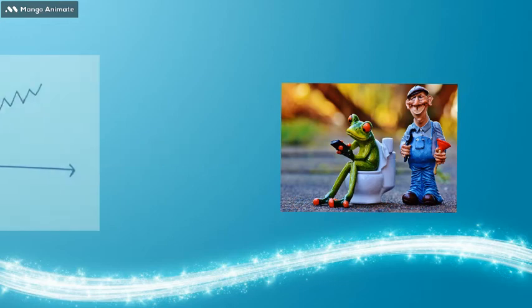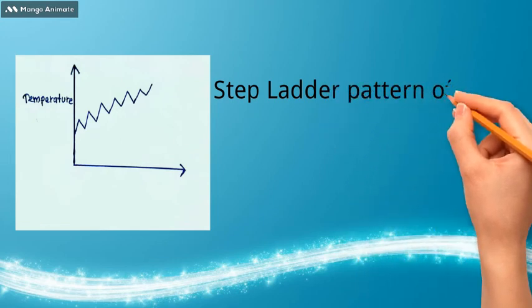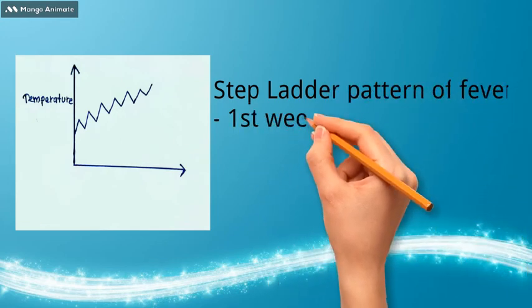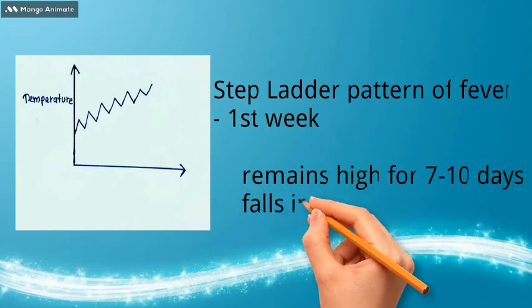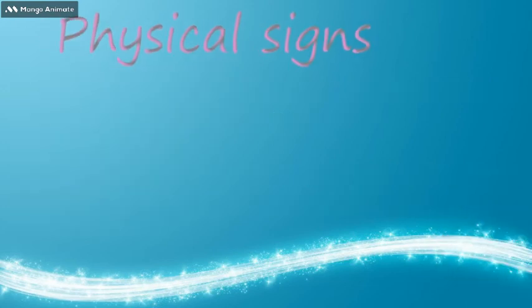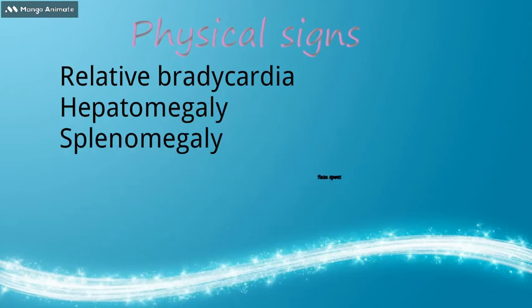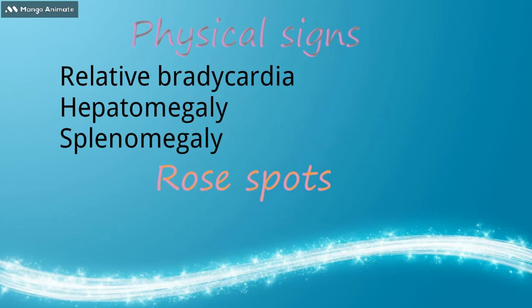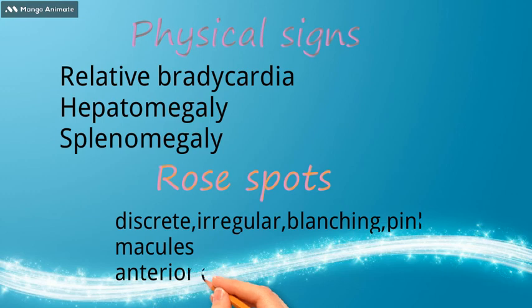In untreated cases, the temperature shows a stepladder rise over the first week of illness, then remains high for 7 to 10 days, and then falls during the third or fourth week. Physical signs include relative bradycardia, hepatomegaly, splenomegaly, and often a rash of rose spots. Rose spots are discrete, irregular, blanching pink macules most often found on the front of the chest.